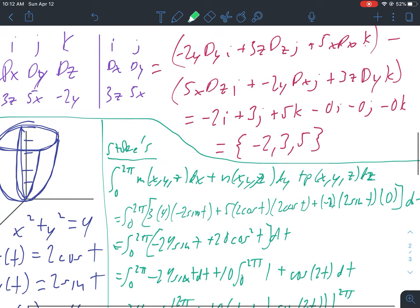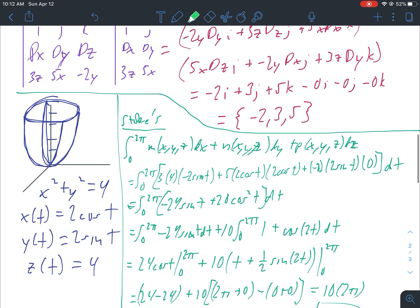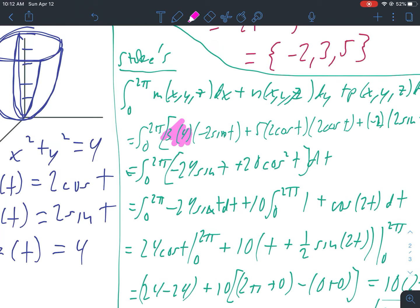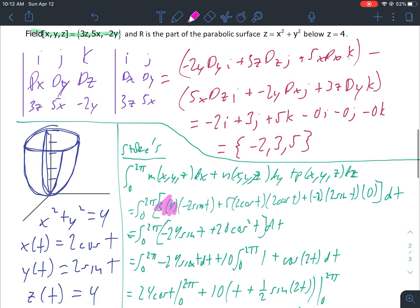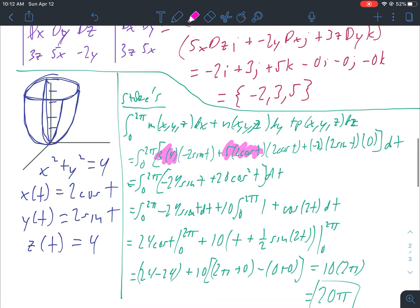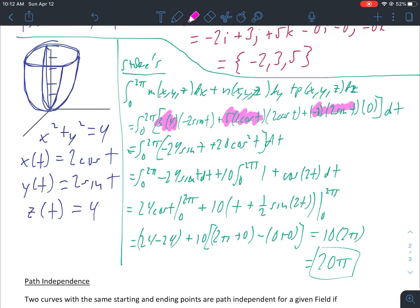We need that obviously for our Stoke's formula. Mind the sloppy handwriting here - just copy down Stoke's formula first and then start replacing things. So m, if you look back at our field right here, m is 3z. So we have 3z, z is 4, dx - so the derivative of 2 cosine. Then n is 5x, so we have 5x dy - so derivative of 2 sine. And then p is negative 2y, so negative 2y, and then derivative of z which is 0.